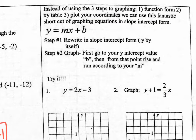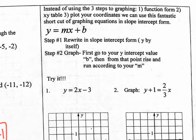Instead of using the three steps to graphing — step 1: rewrite in function form, step 2: make an xy table, step 3: plot your coordinates — we can use the fantastic shortcut of y equals mx plus B. Step 1 is to rewrite in slope-intercept form, getting y by itself. Step 2 is to graph without making a table and without plugging in any numbers. You just jump straight to graphing.